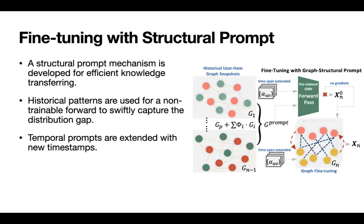Let's step to the second stage. With a pre-trained graph model, we wish to fine-tune it with newly observed interactions so that the model can generalize to shifted user interests and make timely predictions. We enable this feature by a simple yet efficient structural prompt mechanism, where historical patterns as a structural prompt is used for a non-trainable forward to swiftly capture the distribution gap between pre-training and fine-tuning. And time span is also extended for temporal awareness.